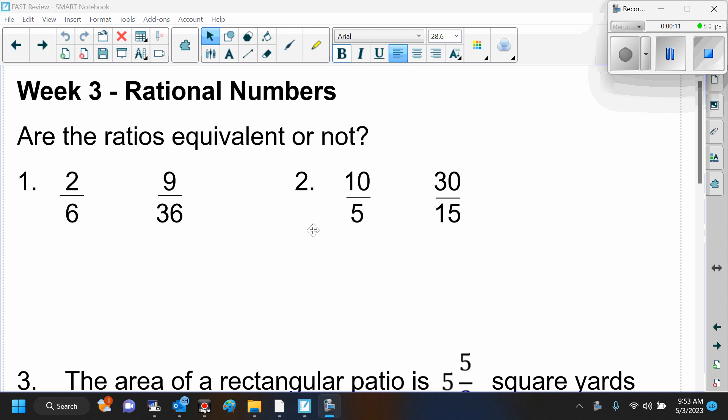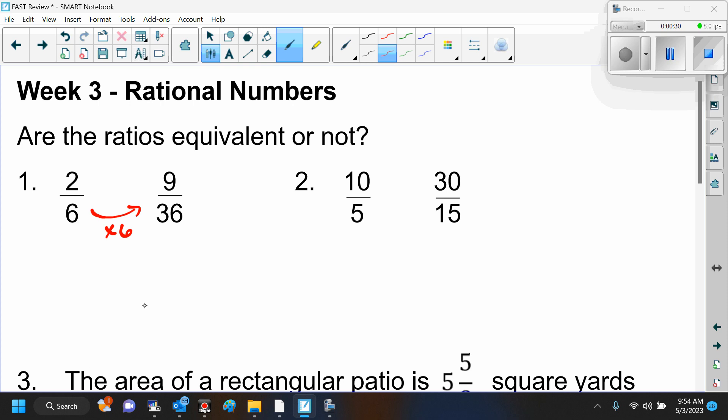What is one way that you can decide if the ratios are equivalent? In order to compare fractions, you can have common denominators, right? So how do I change 6 to 36? 6 times 6, right?